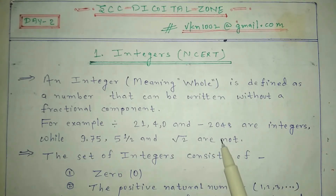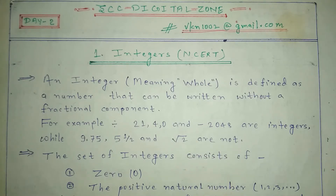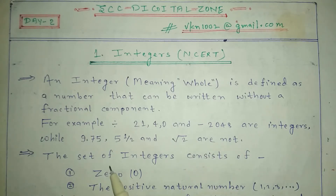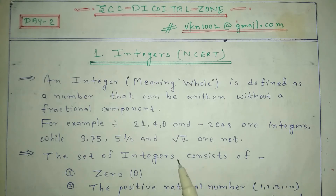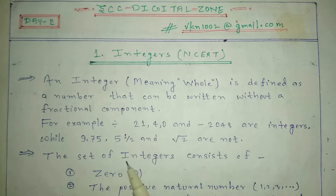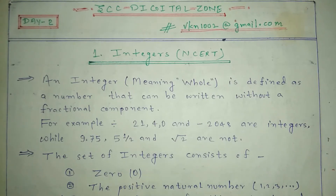Here are some examples: 21, 4, 0, and -2048 — these four numbers are integers. While we have other numbers such as 9.75, 5½, and √2 — these three numbers are not integers because they all include a fractional component.